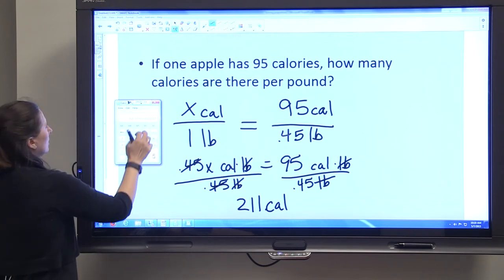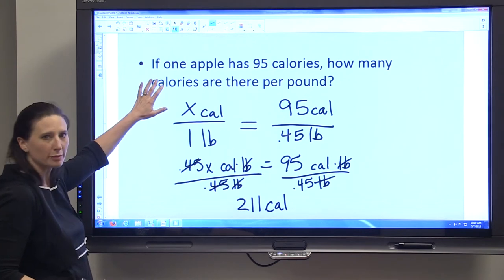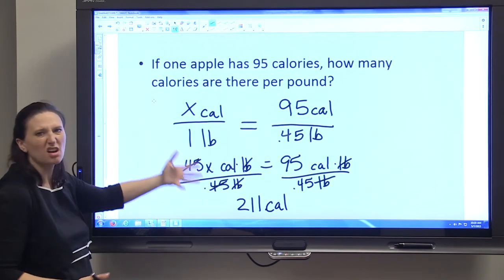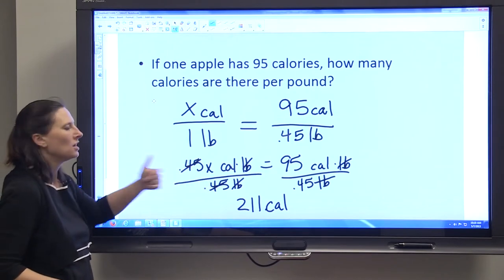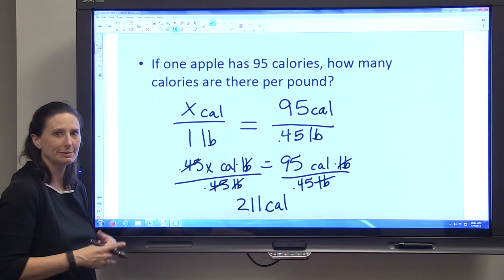So you can see that we can use previous information from the first part of the problem to solve a second part of the problem, but we're still just setting up proportions and cross multiplying in order to solve them.